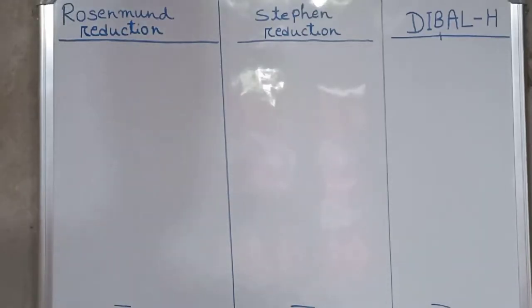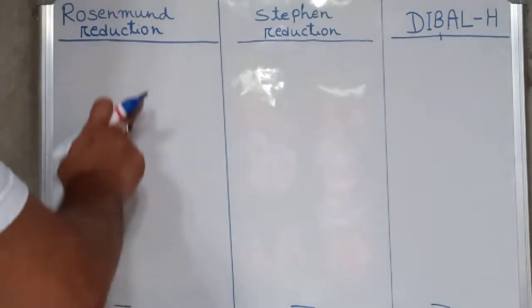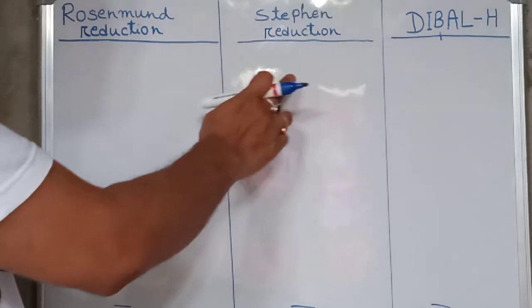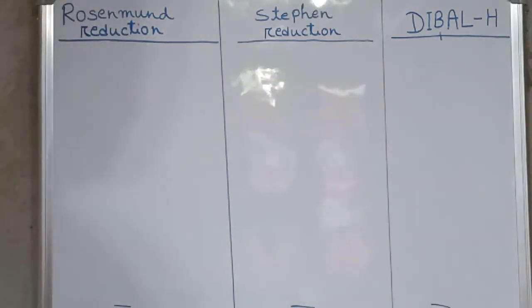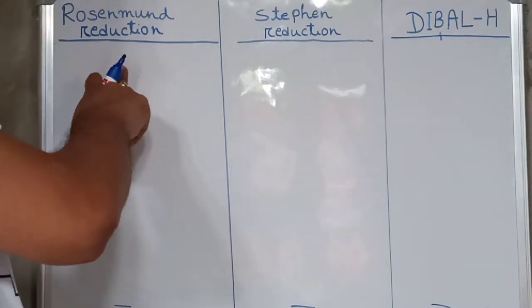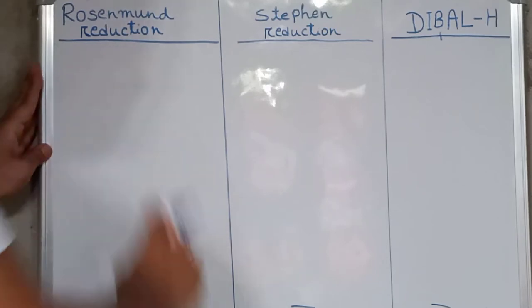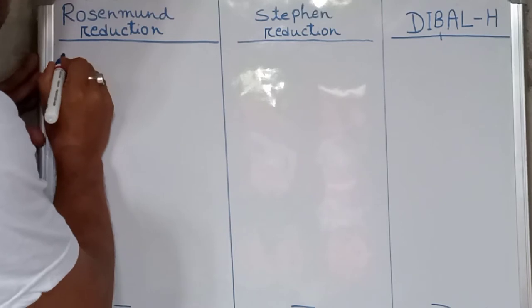Hi everyone, today we will discuss some important reactions for the preparation of aldehydes using Rosenmund reduction, Stephen reduction, and the reducing agent DIBAL-H. In Rosenmund reduction, acid chloride is hydrogenated over a catalyst of palladium on barium sulfate to get aldehyde.